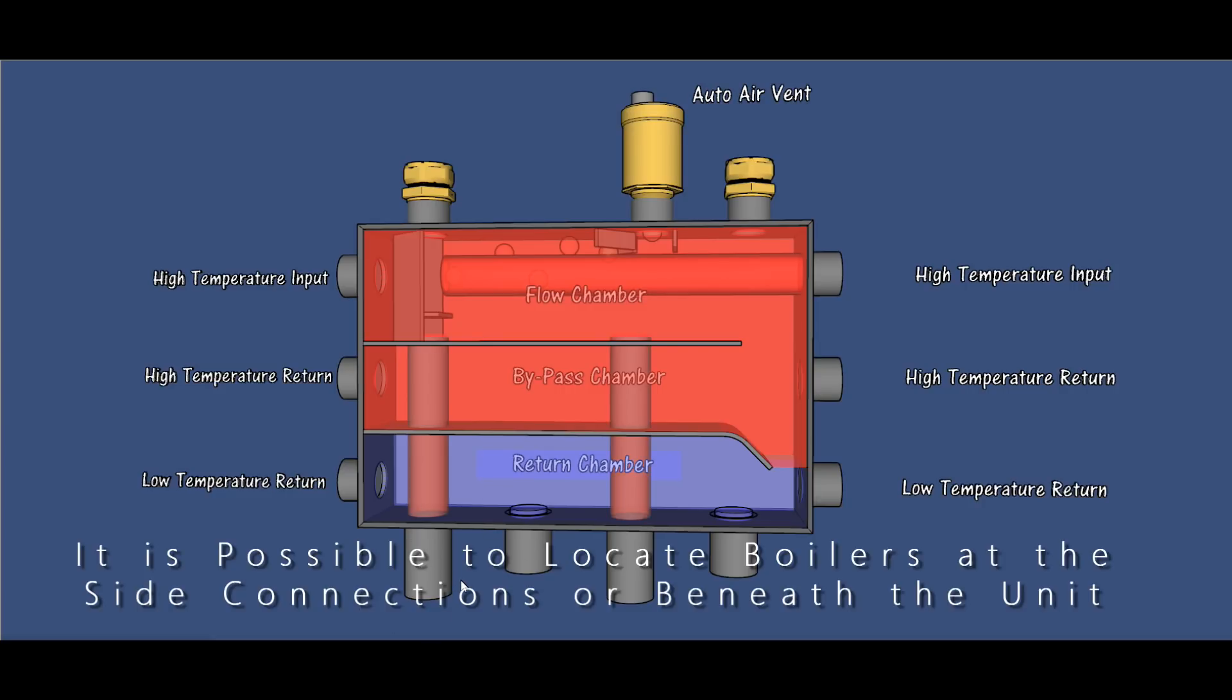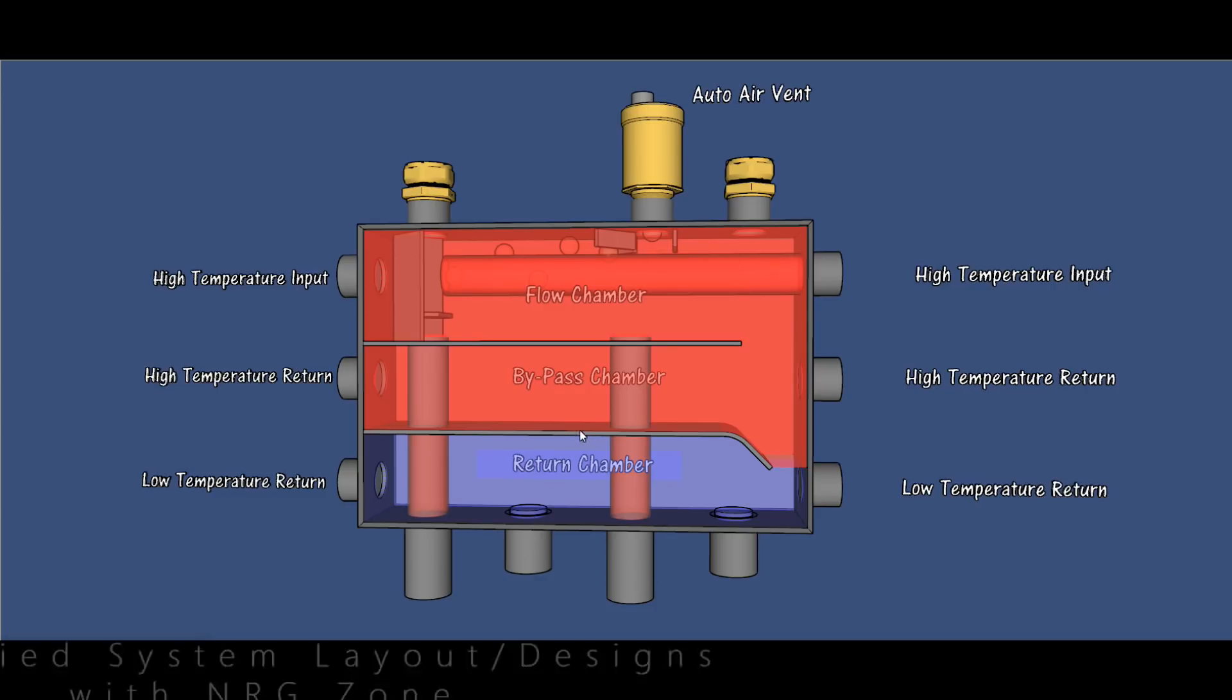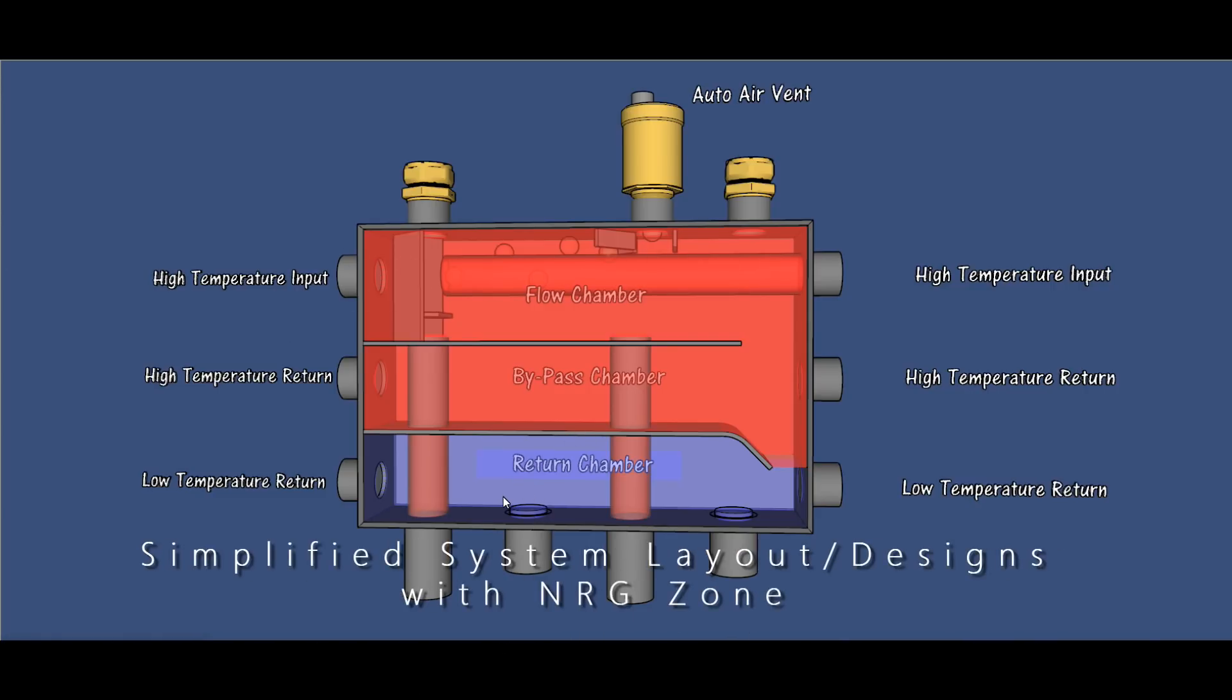You can actually take boilers in from the vertical chambers, ports looking upwards as well. This one could be a flow up, where then any zone port leaving that would become a zone outwards, and your return back to the boiler could be any port leaving the lower chamber. It's incredibly versatile.